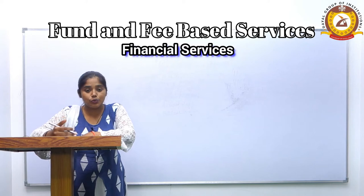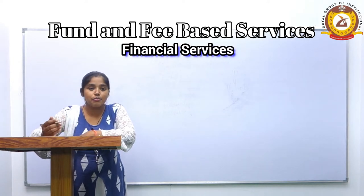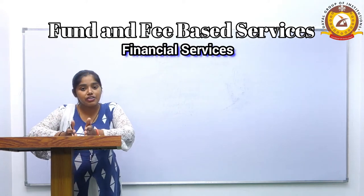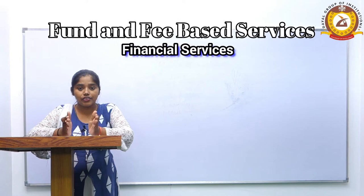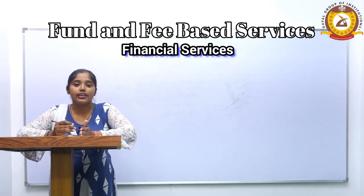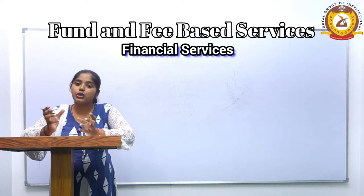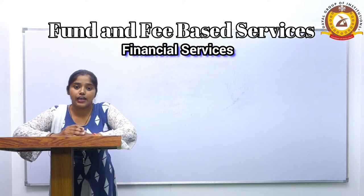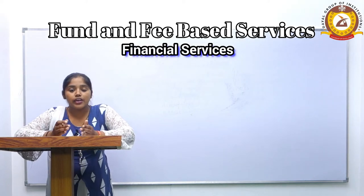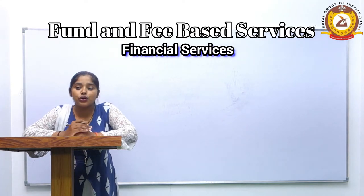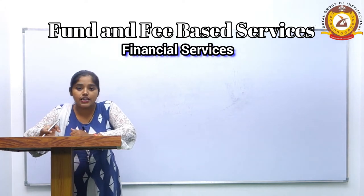Now we start sequence-wise. Number one is fund based financial services. In this, what happens is that there is interest — deposits, fixed deposits — which you deposit in the bank. When the bank lends that money to borrowers, the difference in the interest rate is called their fund based income. This is of many types, so we will discuss some examples that we see in day-to-day life as fund based income.